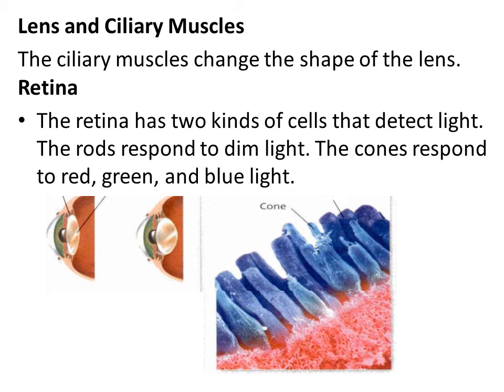When the cornea and the lens refract light, an upside-down image is formed on the retina. The retina is a layer of cells made up of tiny light-sensitive cells called rods and cones. Rods are cells that contain a pigment that responds to small amounts of light — the rods allow you to see in dim light. Cones are cells that respond to color; they may detect red light, green light, or blue light. Both rods and cones help change images on the retina into signals that travel to the brain.